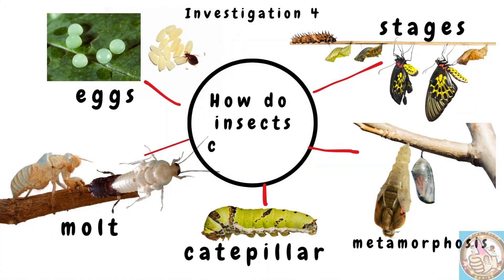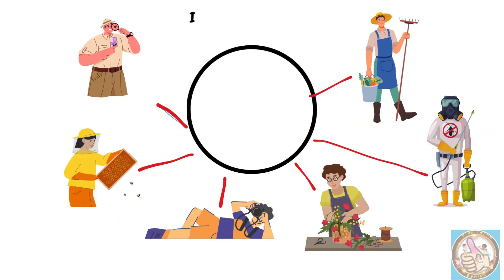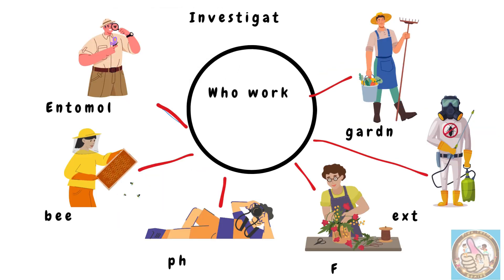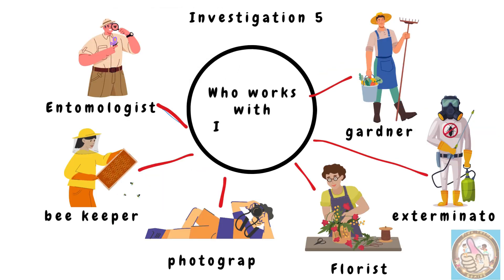How do insects change through stages? Through eggs, molt, caterpillar, and metamorphosis. Who works with insects? An entomologist, beekeeper, photographer, florist, exterminator, and gardener.